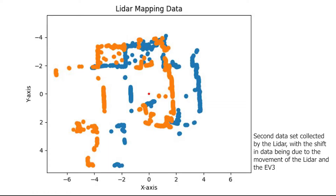Here we can see the second plot. Essentially, with the second collection of data, the LiDAR overlays that on the original one and we can see the changes in the relative environment due to its movement. This allows us to see things that the LiDAR may not have initially seen due to obstacles obstructing its view.